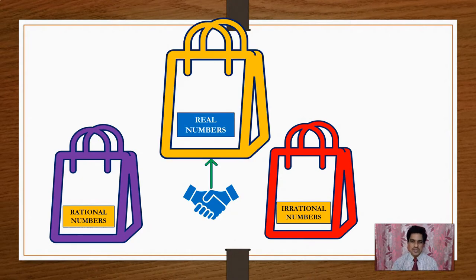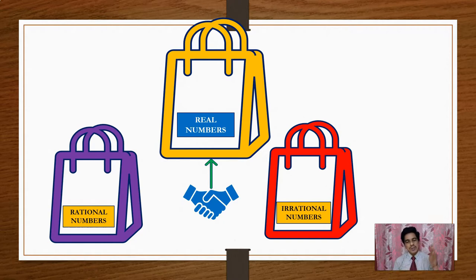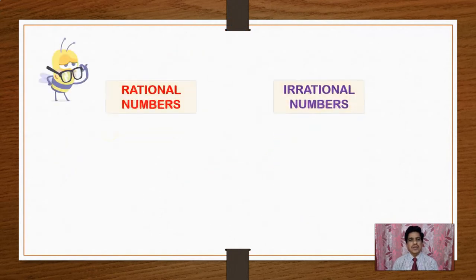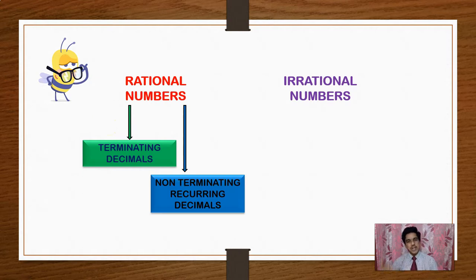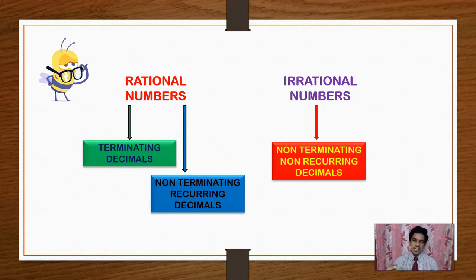If you combine Rational Numbers with Irrational Numbers, this totality of numbers is called Real Numbers. So non-terminating and non-recurring decimals are Irrational Numbers, while terminating and non-terminating recurring decimals are Rational Numbers.